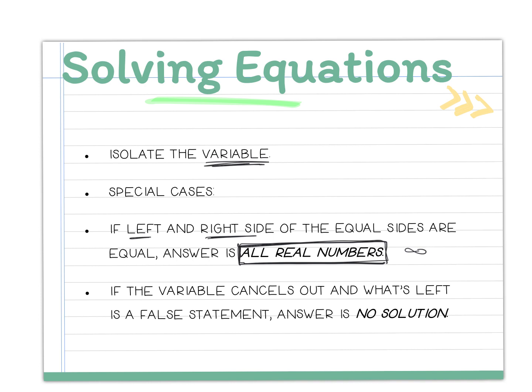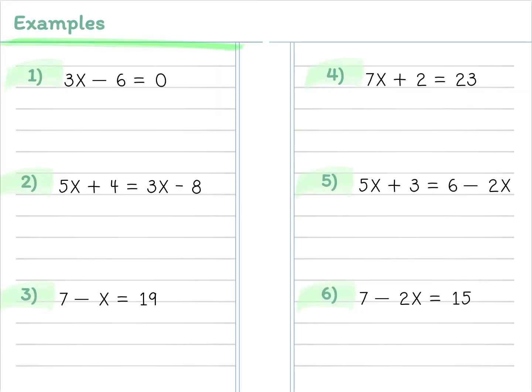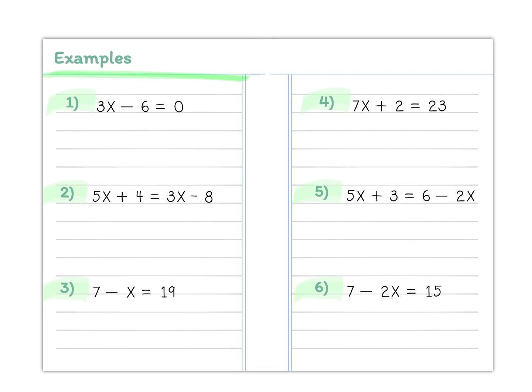The second kind is when you go to solve it and the left side and the right side don't match — it's impossible. You cannot find a value for x that will make the left and the right side equal each other. That's when you get a no solution. It's basically a false statement. So we're looking for either one solution, no solution, or all real numbers — infinite solutions.